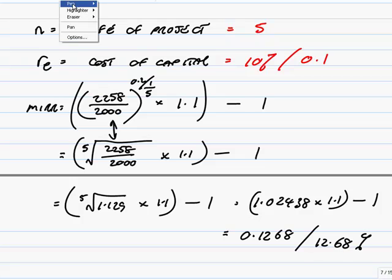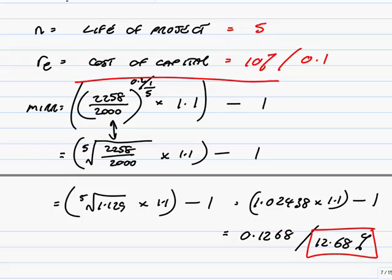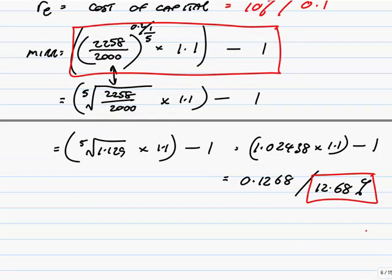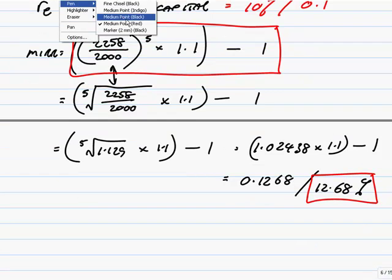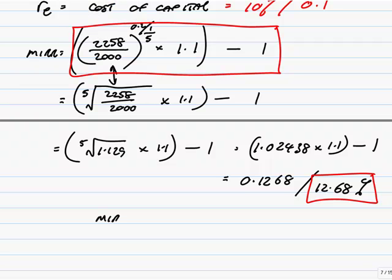Now, please, for heaven's sake, don't write down all those steps in the exam. I was only writing them down to make it easy for you to check if you're not sure about your calculator. Obviously, write down that bit to show you know what figures are going where. The rest of it, you should be able to do on your calculator, then come straight out with the answer. But there we are. The modified internal rate of return here is 12.68%.